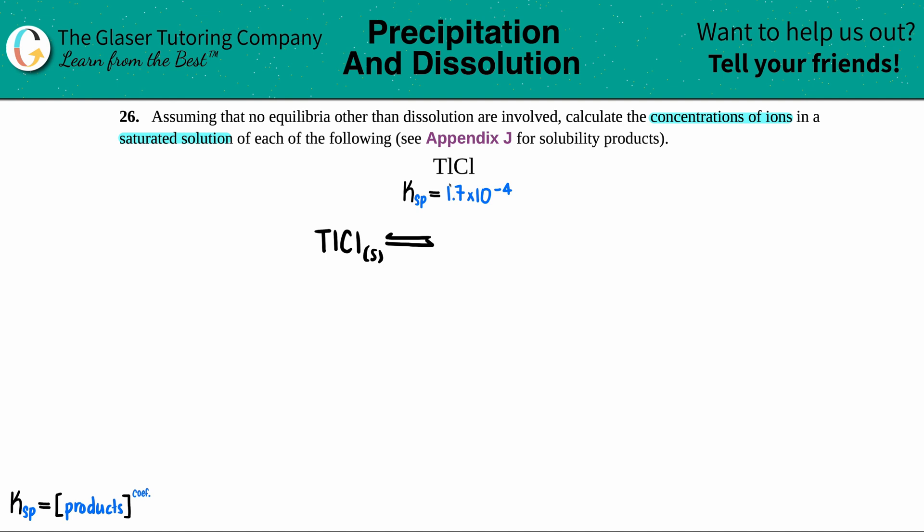And it will go into its ions. We have Tl plus and Cl minus. Chlorine, especially when bound with the metal ionic compound, is always going to be a negative 1 charge. Halogens. And so if there's 1 to 1, 1 Tl for every 1 Cl, the Tl should be a plus 1 charge. Both aqueous because we have charges. And I'm looking at this compound - it's balanced already. So we're good with that.